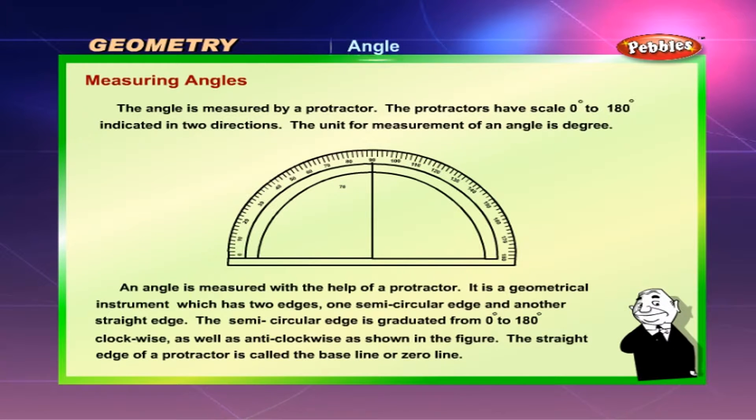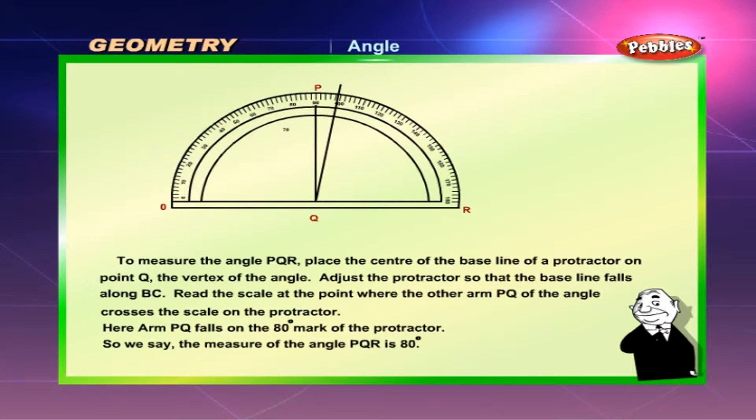The straight edge of a protractor is called the baseline or zero line. To measure the angle PQR, place the center of the baseline of a protractor on point Q, the vertex of the angle. Adjust the protractor so that the baseline falls along BC. Read the scale at the point where the other arm PQ of the angle crosses the scale on the protractor. Here, arm PQ falls on the 80 degrees mark of the protractor. So we say the measure of the angle PQR is 80 degrees.